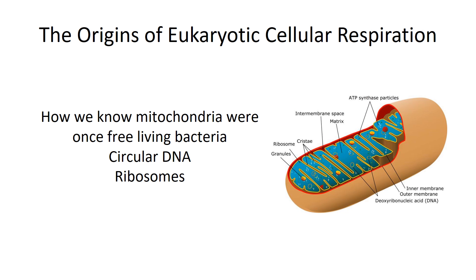The evidence supporting endosymbiosis is actually quite good. When we look at our mitochondria, they actually have circular DNA — the two ends of the DNA are connected, like a hula hoop — whereas our DNA inside a eukaryotic cell is linear. They also have ribosomes that resemble bacterial ribosomes. All cells have ribosomes to make proteins, but there are small differences between eukaryotic and bacterial ribosomes. When we look at our mitochondria, their ribosomes are much more like bacteria.